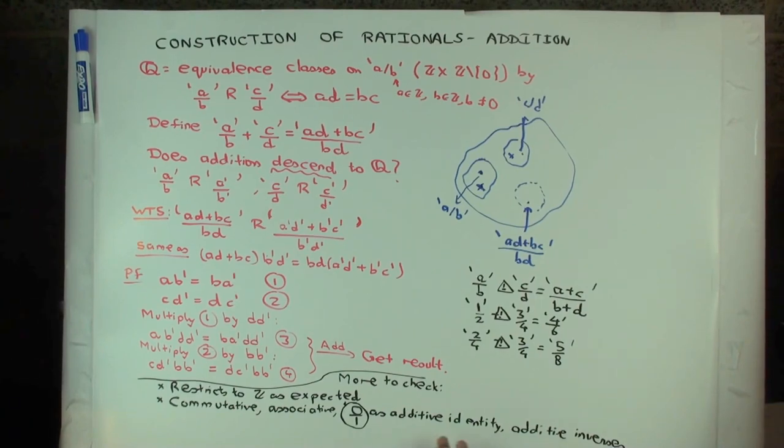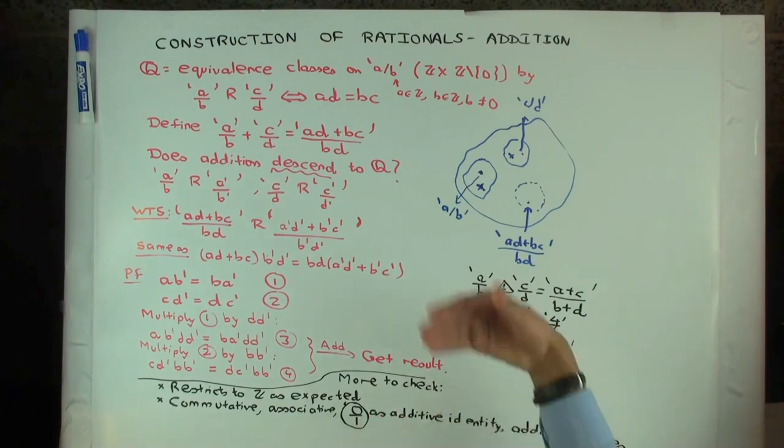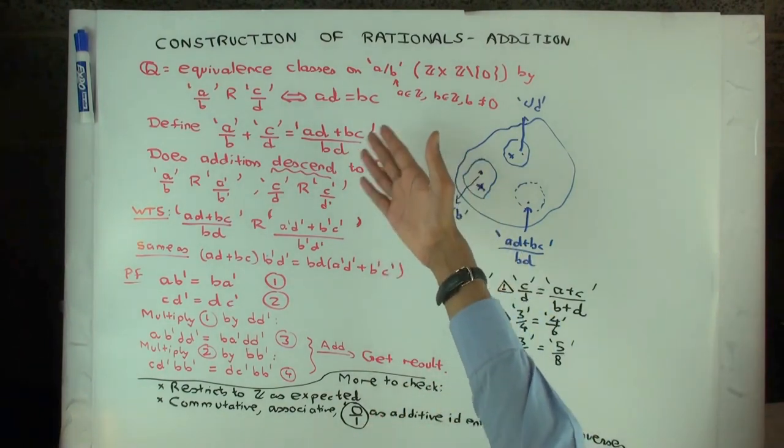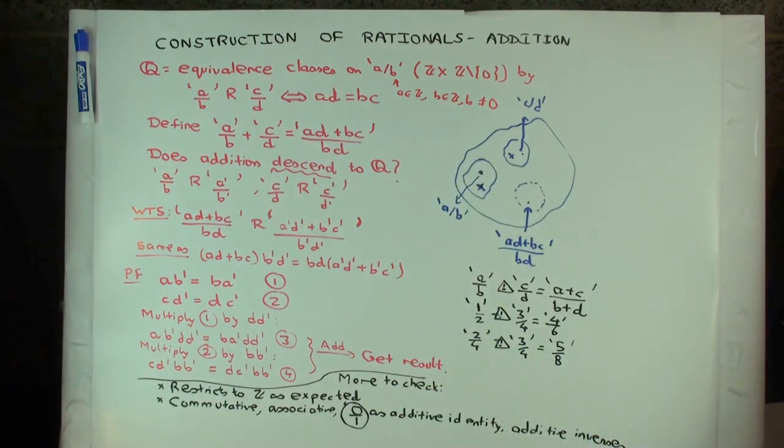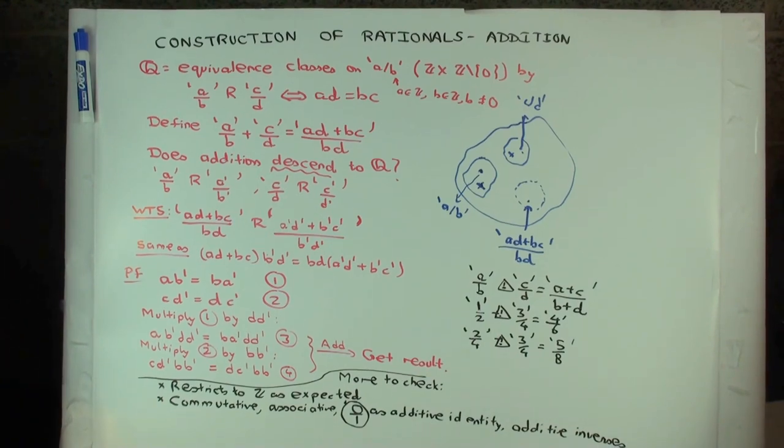and it also satisfies some compatibility with multiplication, then that addition is essentially unique. It has to be this addition. So it's actually like that. We don't really have much choice once we put out the conditions clearly. That's a little beyond the scope of this video. Let me stop here.